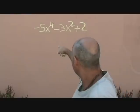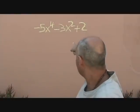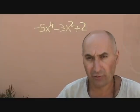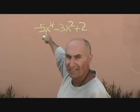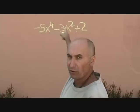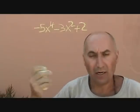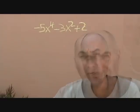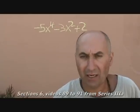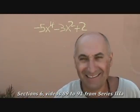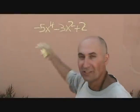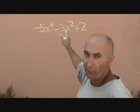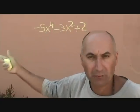So what we have right now is negative x to the fourth minus 3x squared plus 2. When it comes to factoring trinomials — simple or complex — the first term's exponent has to be double the second term's exponent, and they have to be whole numbers, because we can't have decimals in polynomials. From series 3a, videos around 89 to 91, we covered the definition of a polynomial. So we need that first power to be twice the second, or the second power to be half the first.